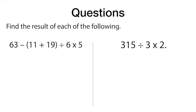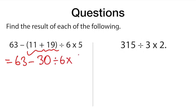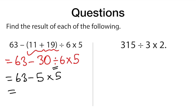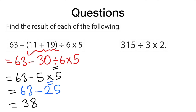Another question — again there is parentheses, so we do that first. 11 plus 19 equals 30. The expression becomes 63 minus 30 divided by 6 times 5. Division is on the left, so we do division first: 30 divided by 6 equals 5, then times 5. Multiplication comes before subtraction: 5 times 5 equals 25. Finally, 63 minus 25 equals 38. The answer is 38.